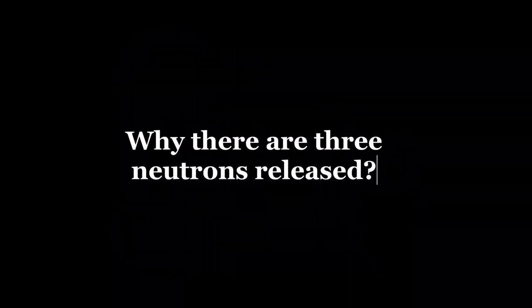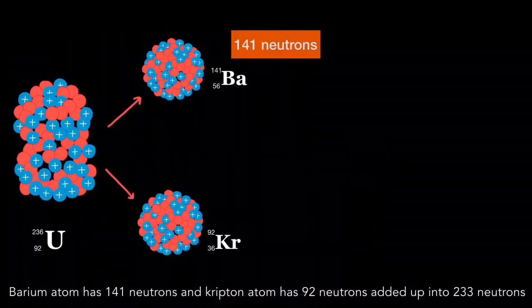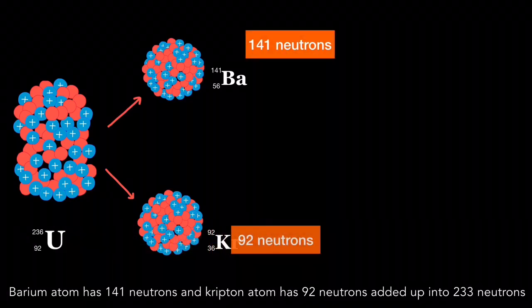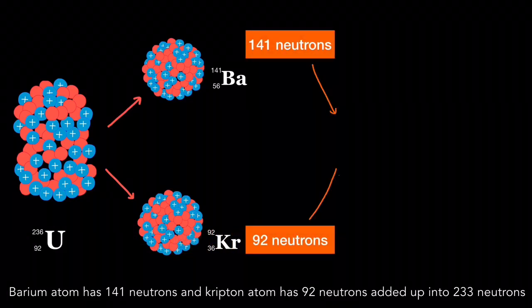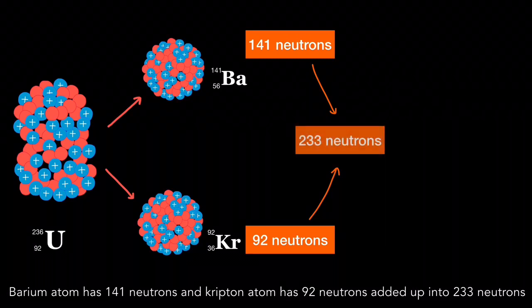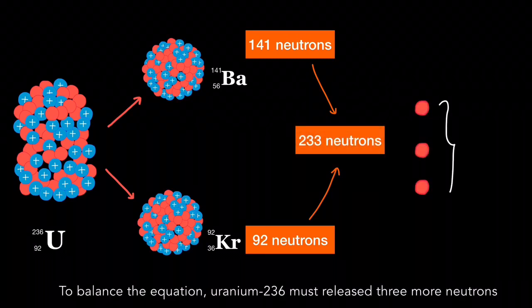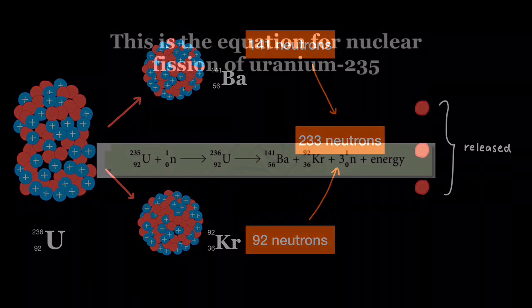But why are three neutrons released? Barium atom has 141 neutrons. Krypton atom has 92 neutrons. Added up into 233 neutrons. To balance the equation, uranium-236 must release three neutrons.